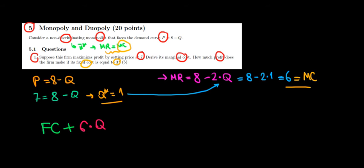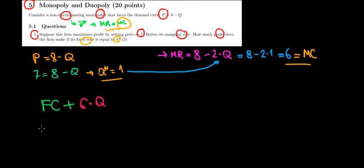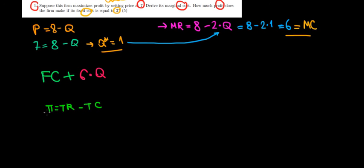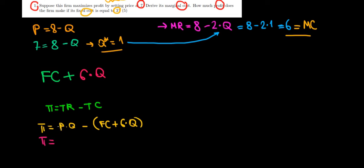To find the profit we take the difference between total revenue and total cost. Profit equals price times quantity minus the total cost, which is the fixed cost plus 6 times every unit sold. Substituting the values: profit equals 7 times 1 minus (3 plus 6 times 1). That gives us 7 minus 9, which equals minus 2. So we have a negative profit.